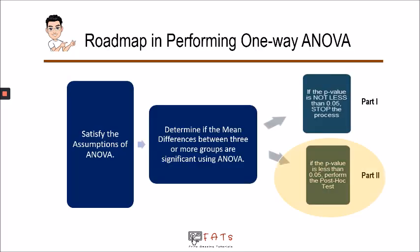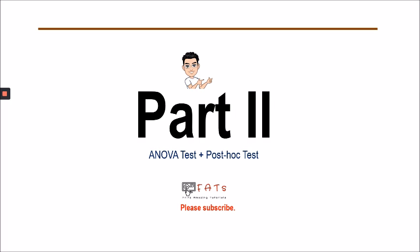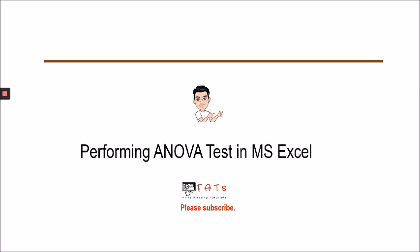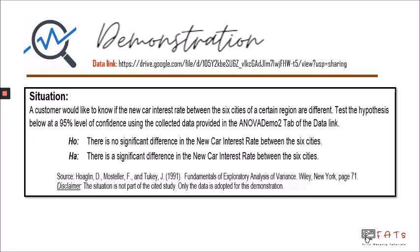We are now in the second part of the roadmap in performing one-way ANOVA. In this part two, we will start by performing the ANOVA test in Microsoft Excel using a given situation. A customer would like to know if the new car interest rate between the six cities of a certain region are different. Our job is to test the hypothesis at a 95% level of confidence using the collected data provided in the ANOVA Demo 2 tab of the given data link.